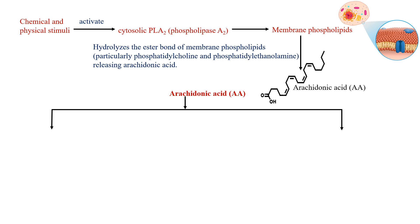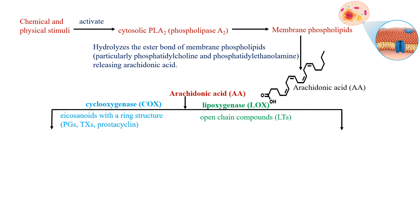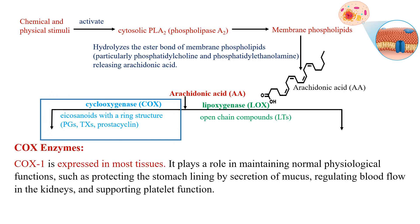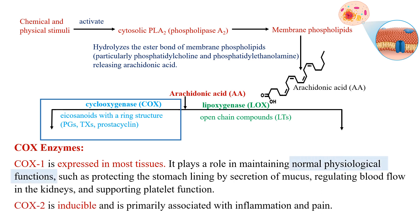Once arachidonic acid is free, the next set of superhero enzymes enter: the COX enzyme, that is the cyclooxygenase enzyme. It creates eicosanoids with ring structures — prostaglandins, thromboxanes, and prostacyclins. If the lipoxygenase enzyme acts on arachidonic acid instead, it creates compounds with an open chain. COX-1 is like an everyday superhero found everywhere in the body, protecting the stomach lining, regulating kidney blood flow, and helping platelets. COX-2 is the superhero that shows up when there is trouble like inflammation and pain.